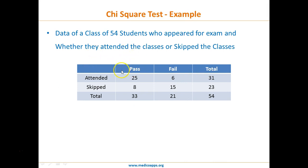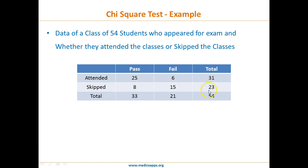There are only two variables: pass and fail, and two data points: attended or skipped. This is why it is a nominal scale. The data shows: students who attended and passed is 25, attended and failed is 6, giving a total of 31. Students who skipped and passed is 8, skipped and failed is 15, giving a total of 23. The overall number of students is 54. We will analyze this using the chi-square test.